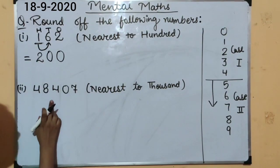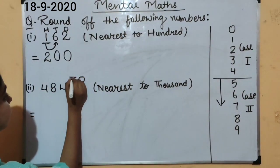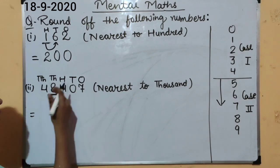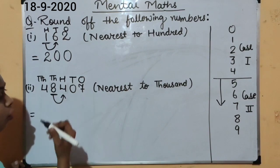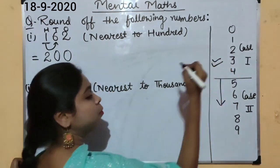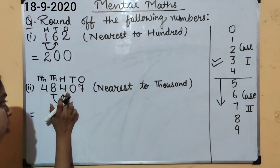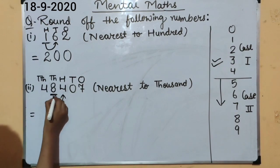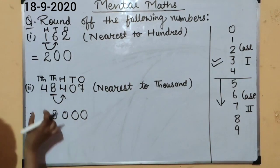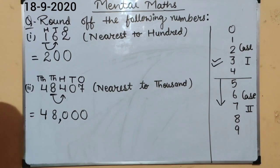Our next question is 48,407, nearest to the 1000 place. Let's find the 1000s place: 1s, 10s, 100, 1000, 10,000. The digit at the 1000s place is 8. The previous place digit is 4. Since 4 is smaller than 5, it belongs to Case 1. The digit at the mentioned place remains the same — 8 stays 8 — and the previous place digits become 0. The 10,000 place digit stays the same. So our answer is 48,000.